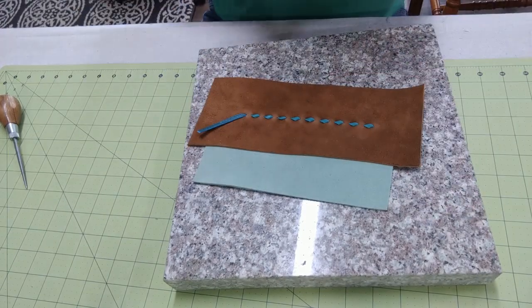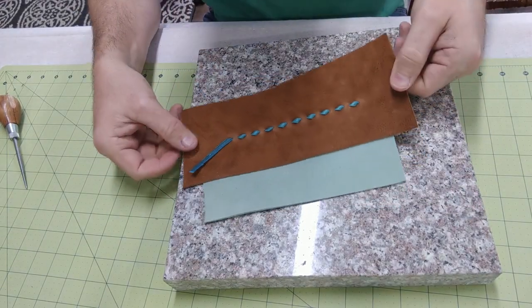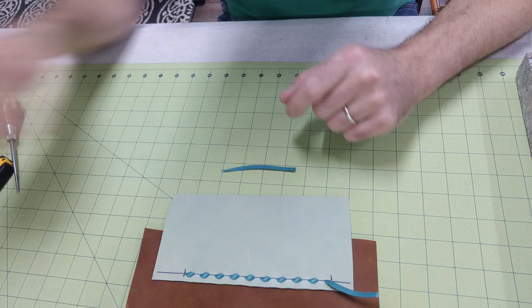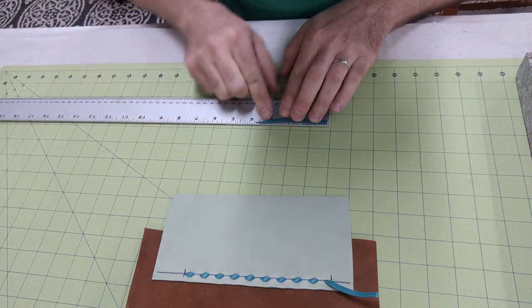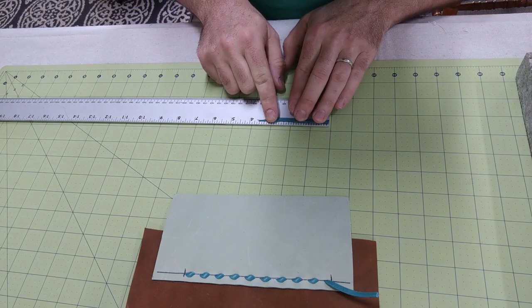What I have now is my two pieces of leather laced together and trimmed. Now take the piece of lace you trimmed off and measure it. I ended up with 3.5 inches of excess.